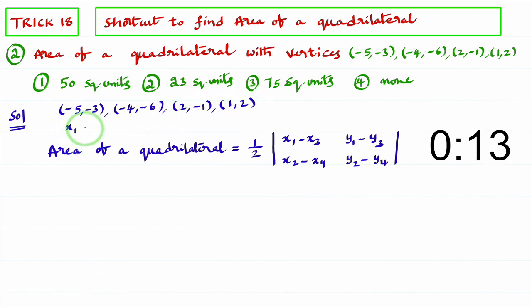You consider first vertex as x1 y1. Second vertex as x2 y2. Third vertex as x3 y3. Fourth vertex as x4 y4.